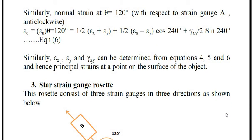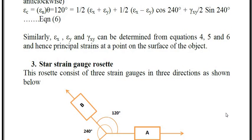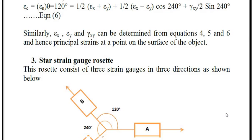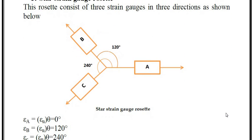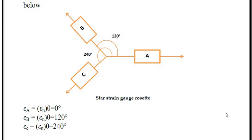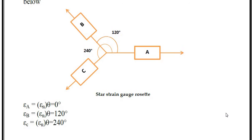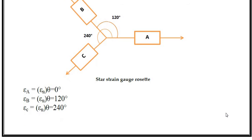The next type is the star strain gauge rosette. The arrangement is shown in the picture. Strain A is at 0 degrees, A and B have an angle of 120 degrees, and A and C have an angle of 240 degrees. We put the theta values into our equation to find the new equations.